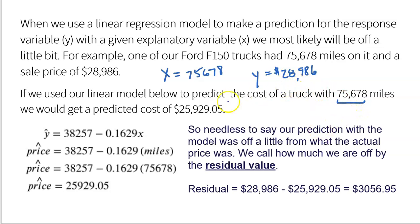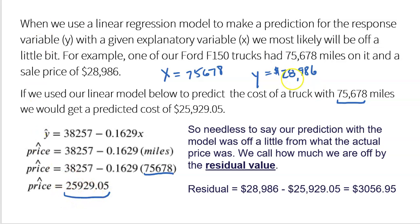But if we were to use our model to predict the price for a truck with 75,678 miles on it, we don't get the actual price — we get a predicted price of $25,929.05. I literally took the linear model, plugged in the mileage of 75,678, and got a predicted price. This is why it's so important to understand that here is the actual price and this was the predicted price — that's why the hat needs to be on the Y-hat. Our prediction with the model was off a little bit.